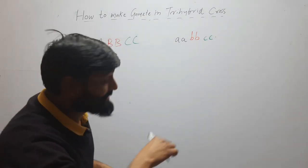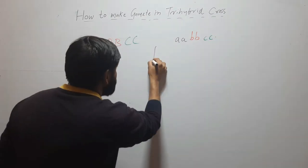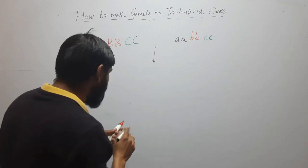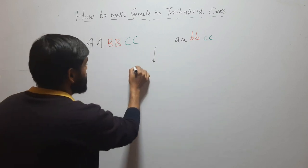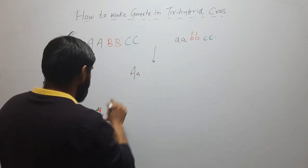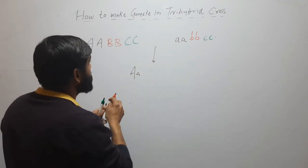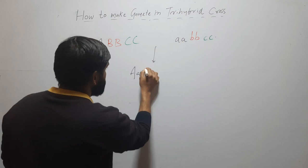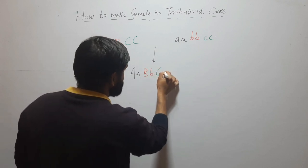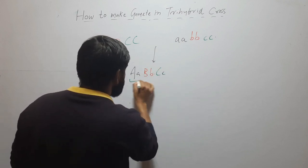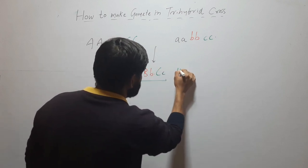So what will I get there? Here I will get a hybrid — that is capital A, small a, capital B, small b, capital C, and small c. So this is the hybrid.